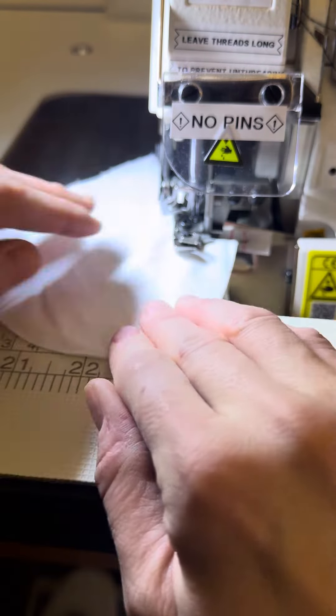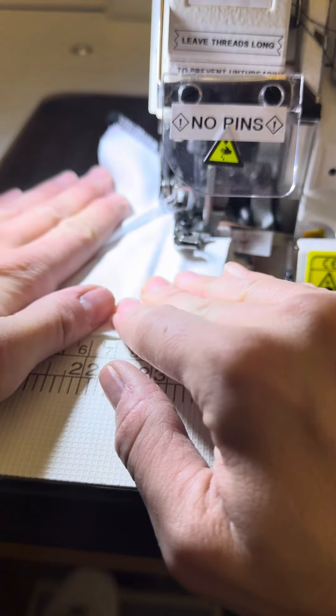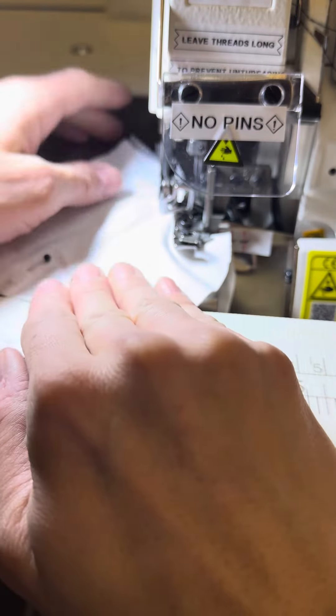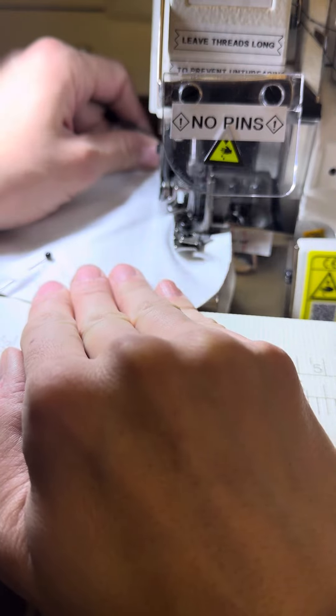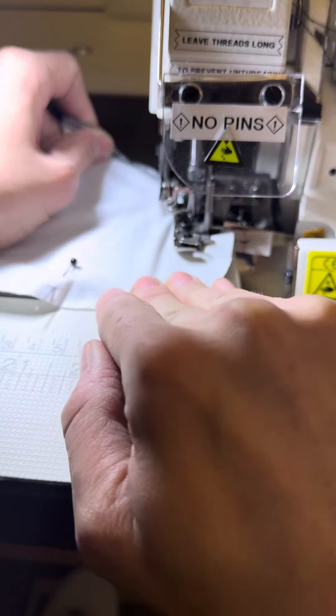I'm going around my circle, removing the pins well before I get to them so they don't accidentally get caught. Once you get a tail end here, you can even use that to help you guide and just turn your curve.